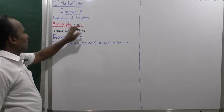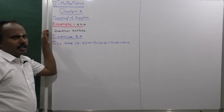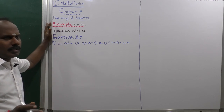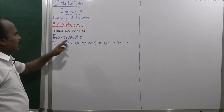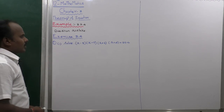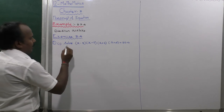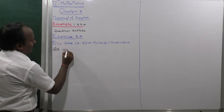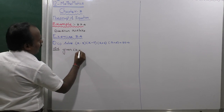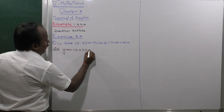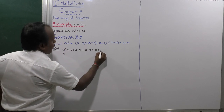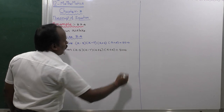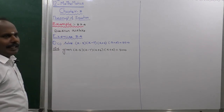Example 3.24 — this is Exercise 3.4, the first sum, first subdivision. The given equation is: x minus 5, x minus 7, x plus 6, x plus 4, is equal to 504.